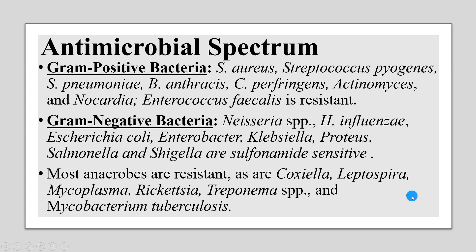Regarding the spectrum of sulfonamides, among gram-positive bacteria they can cover Staphylococcus, Streptococcus pyogenes, Streptococcus pneumoniae, Bacillus anthracis, Clostridium perfringens, Actinomyces, and Nocardia, but Enterococcus faecalis is resistant. Among gram-negative bacteria, species of Neisseria, Haemophilus influenzae, E. coli, Enterobacter, Klebsiella, Proteus, Salmonella, and Shigella are sensitive. Most anaerobes are resistant, as are Coxiella, Leptospira, Mycoplasma, Rickettsia, Treponema, and Mycobacterium tuberculosis.